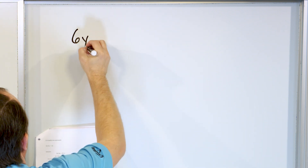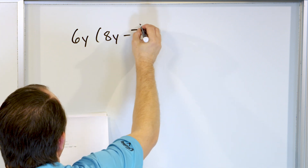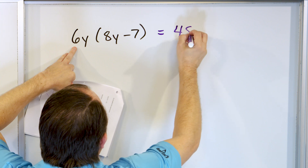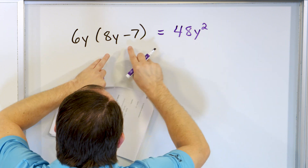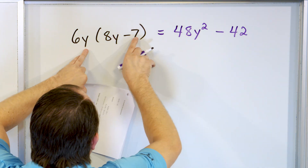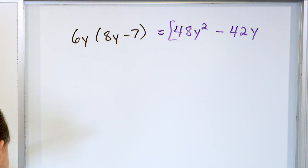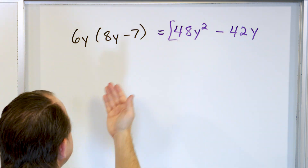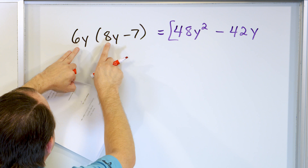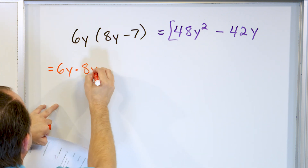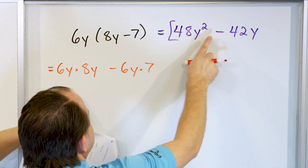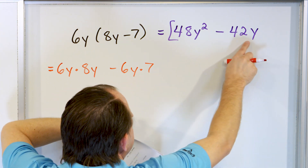What about 6y times parentheses 8y minus 7? Multiply 6y into the first term: 8 times 6 is 48, and y times y adds exponents for y squared, giving 48y squared. Linked with a minus sign, then 6 times 7 is 42, and y can't combine with anything else, so it comes along. The answer is 48y squared minus 42y.